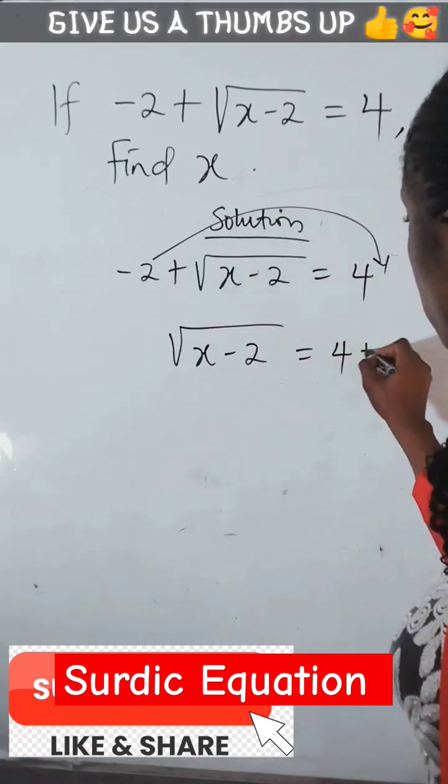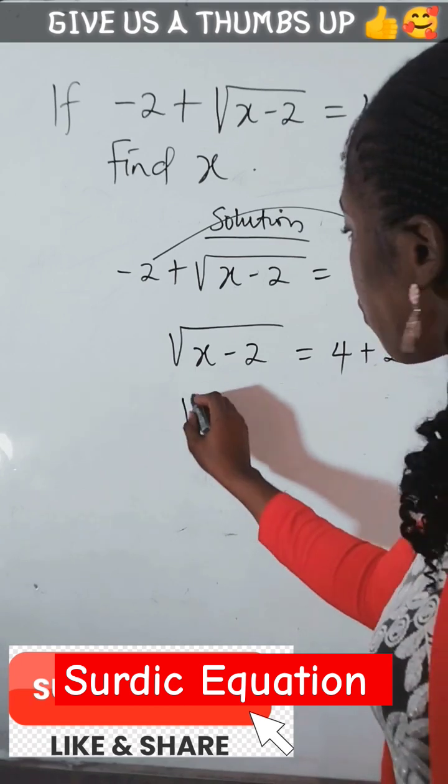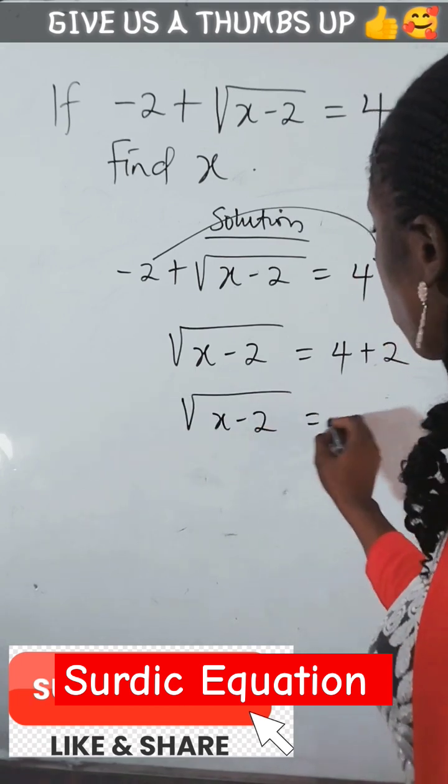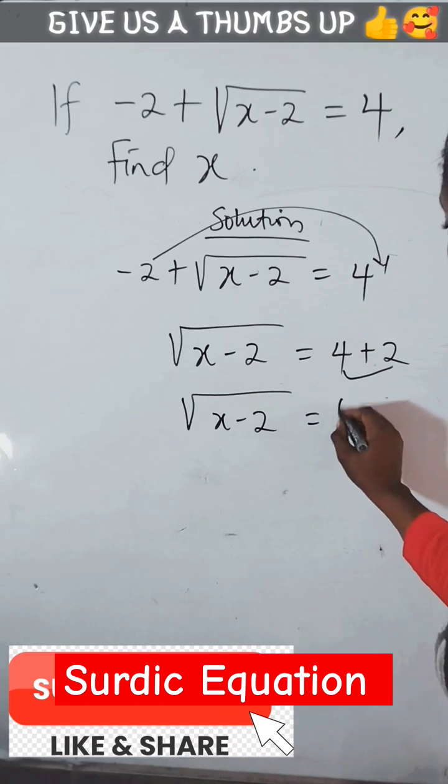Move this to this, it becomes positive 2. So we have √(x - 2) = 6 when we add these together.